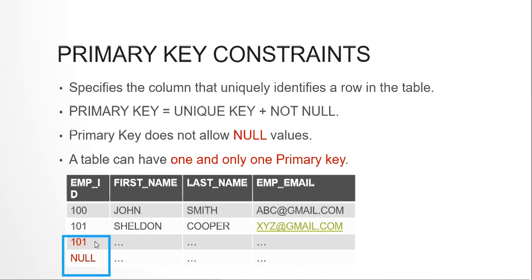Does that sound familiar? Yes — a primary key is essentially like a unique key plus a not null constraint. A unique key also prevents repetitive data in a column, but unique key would allow null values. Primary key combines both: the column will always have unique data and will never allow any null values.